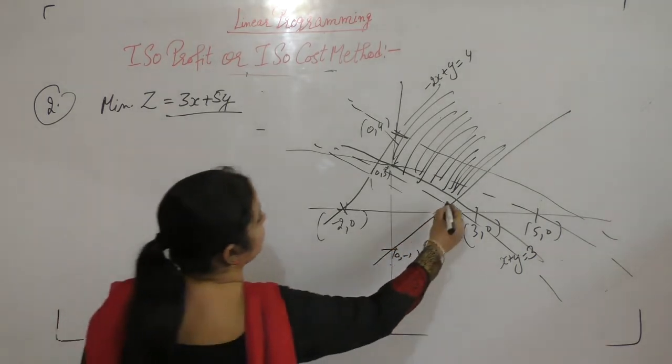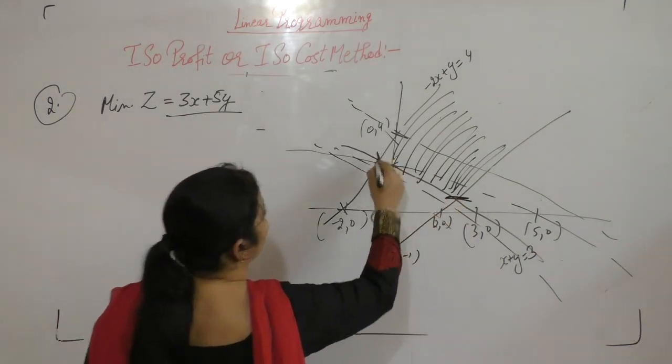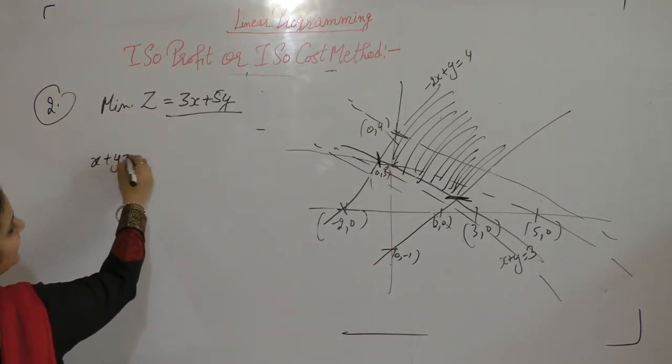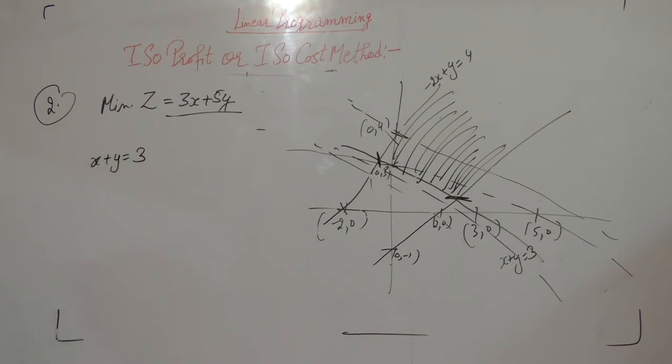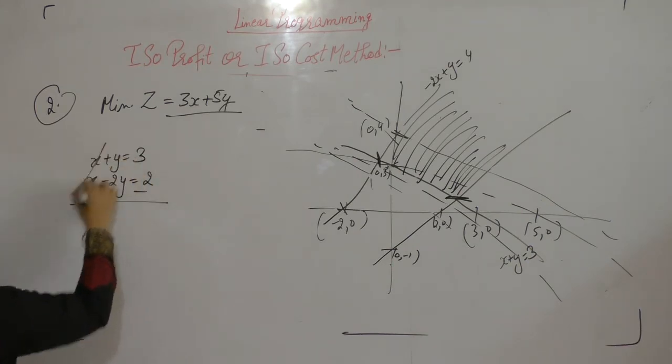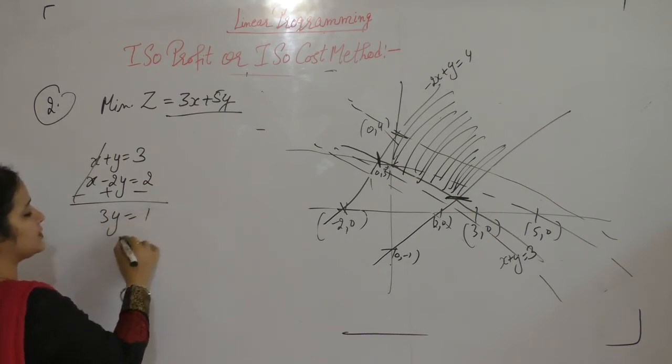First we have to find the point of intersection. This is point A. x plus y equals 3 and x minus 2y equals 2. Eliminate x here. 3y equals 1, so y is 1 by 3.